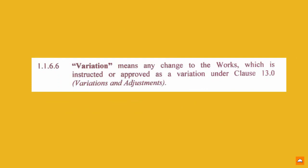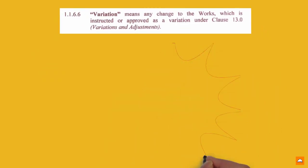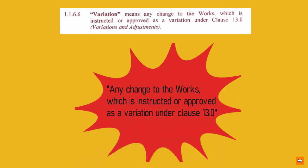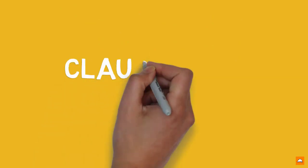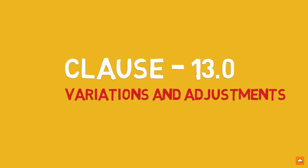So let's go and find out what it means by a variation as per SBD02. Any change to the works, which is instructed or approved as a variation under clause 13.0, has been interpreted as a variation. So, let's see what's there in clause 13.0, Variations and Adjustments.